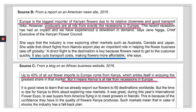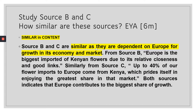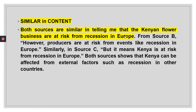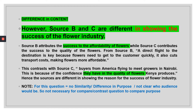The difference is that Source B focuses on transport costs making flowers affordable as the reason people buy them, whereas Source C is about the quality of flowers. Both show success and dependence on Europe, and both show recession risk, but they differ in explaining why Kenyan flowers are popular — one says they are cheap, the other says they are high quality.